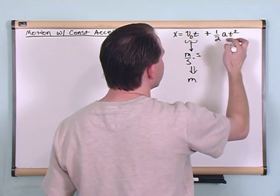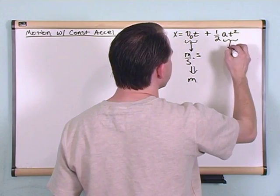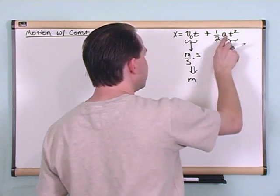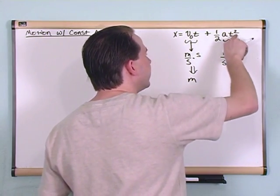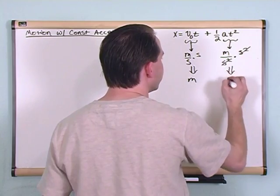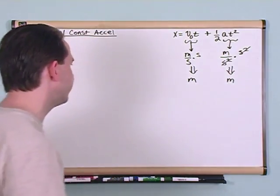Here, one half is a constant so it really doesn't matter. So look at the rest of this. The acceleration is meters per second squared. That's the units of acceleration. The t is squared, so I have time squared and they cancel and so what I'm left with again is meters, which is a unit of distance.